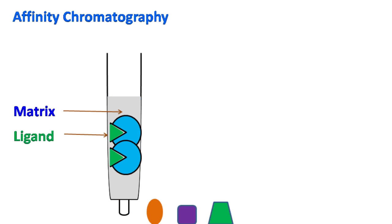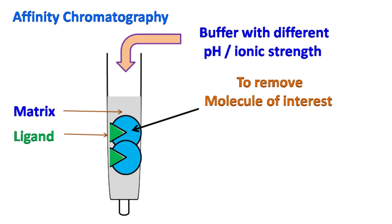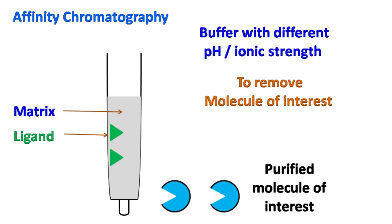Next, to dissociate the molecule of interest from the ligand, a buffer with different ionic strength or pH is passed. This finally releases the molecule of interest from the ligand and the molecule is obtained in pure form.